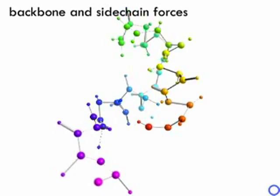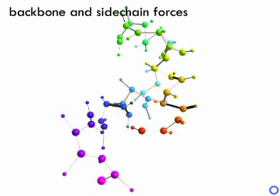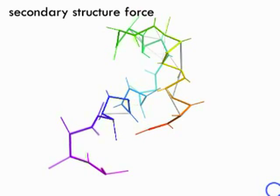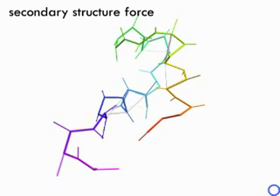Black rods are repulsive forces and white rods are attractive forces. Here we see the spring forces that maintain the predicted secondary structure, in this case alpha helices.